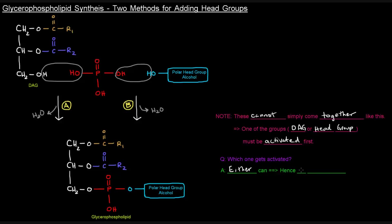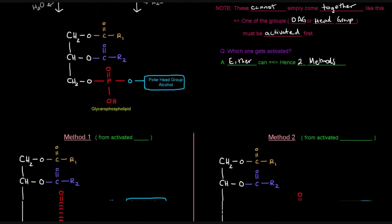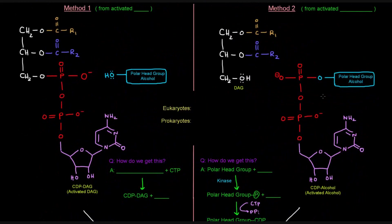This is the reason there are two methods for actually adding the head group to make the glycerophospholipid. Method one will basically be starting from an activated diacylglycerol, and then method two will be from the activated alcohol. Let's take a look at method one first.